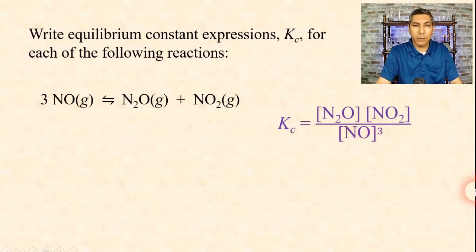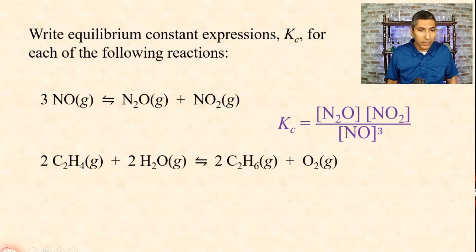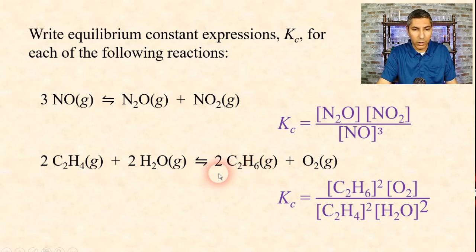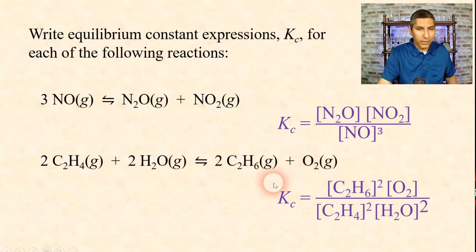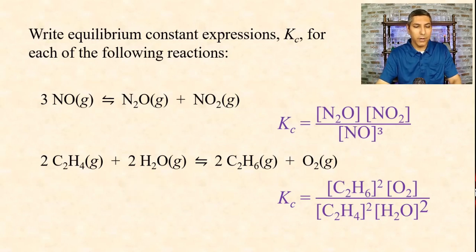That is our equilibrium constant expression. Just as a reminder, equilibrium constant expressions are equations — don't leave off the Kc equals part, otherwise that will be the wrong answer. Let's try this one: we have a hydrocarbon reacting with water to make another hydrocarbon and O2 gas. Kc equals [C2H6] squared times [O2], all over [C2H4] squared times [H2O] squared — products over reactants raised to the power of the coefficients.